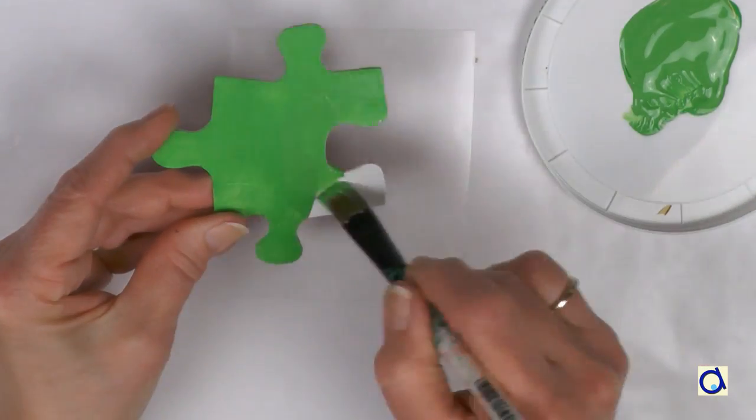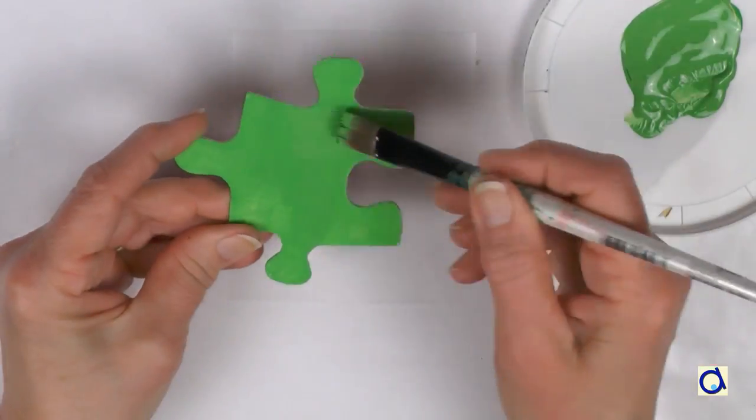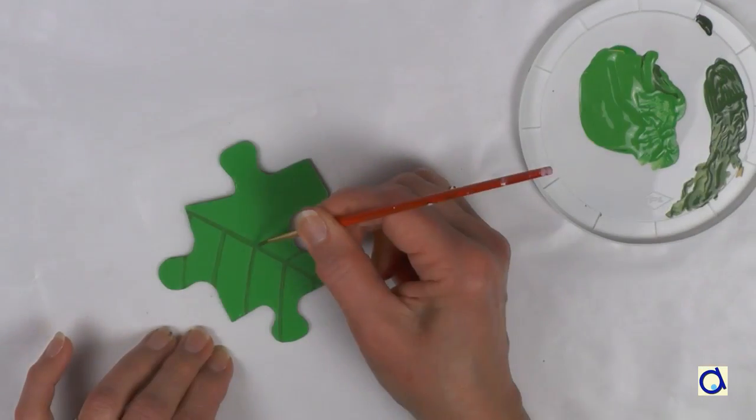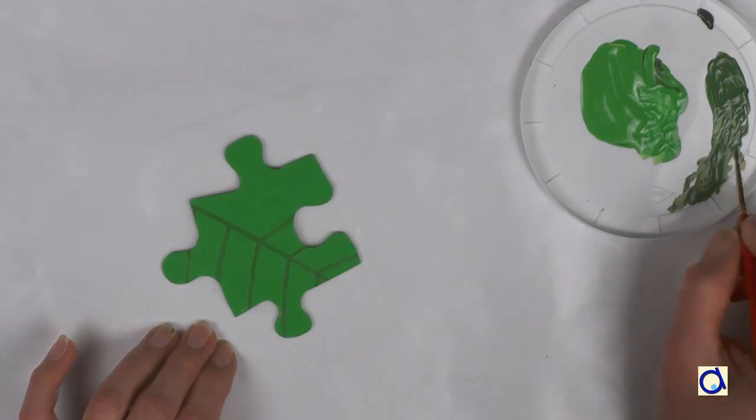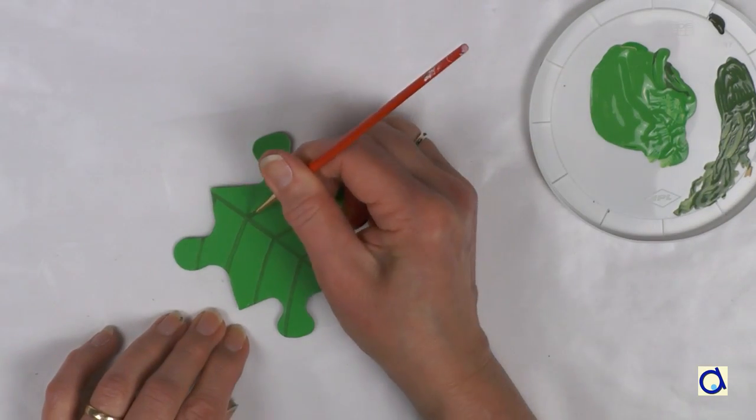To create this magnet, paint the back of the puzzle piece completely green. When the paint is dry, you can paint the veins of the leaf with a very fine brush in a darker green.